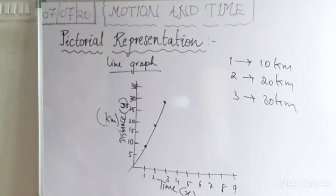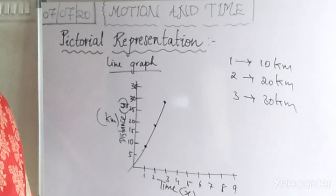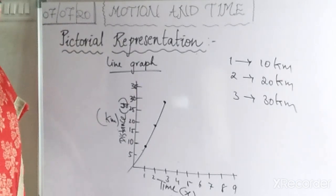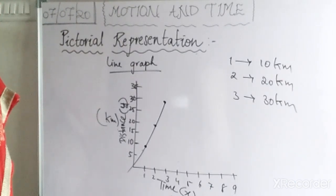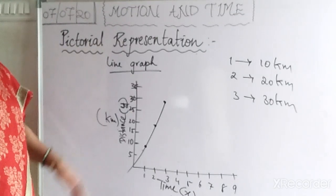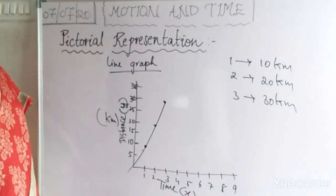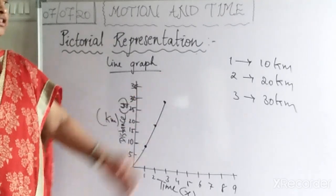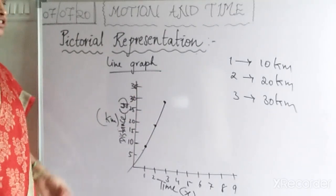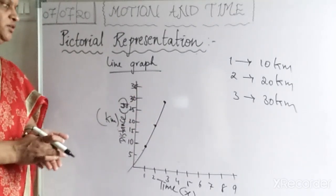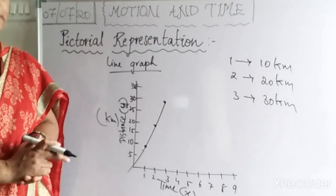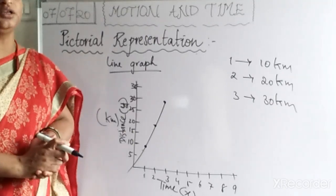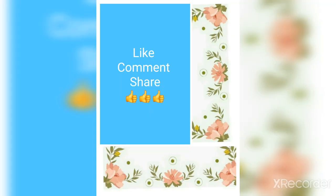This data shows that the vehicle is traveling with uniform speed, so we can say this motion is uniform motion. If an object does not cover equal distance in equal intervals of time, we say it is non-uniform motion. But here the data is based on uniform motion. So this is about the graphs: bar graph, pie graph, and line graph.